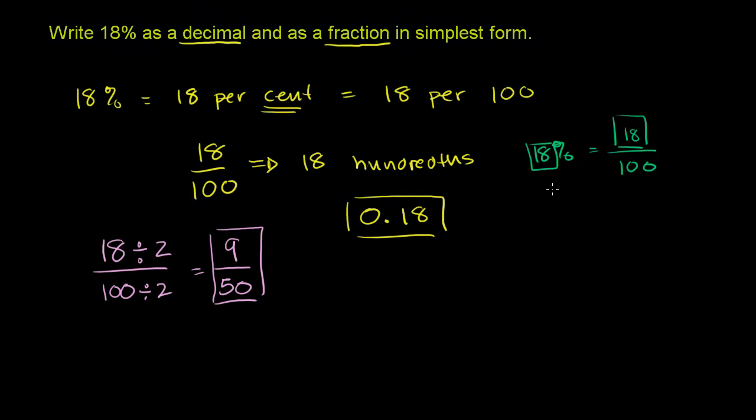And another way to think about it, you could view this as 18.0%. So this is 18.0%. When you want to convert this, I just added a trailing zero there, just so that you see the decimal.